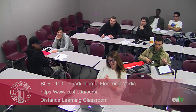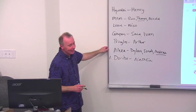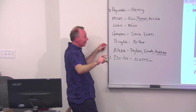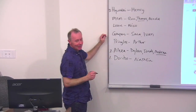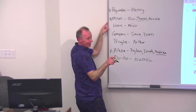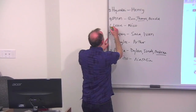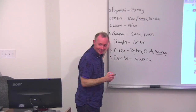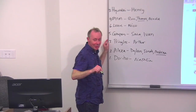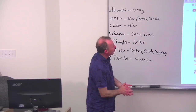Natalia will go first. Henry is second. Dylan and Jonah are third. Ron and company are fourth. Sarah and Ivan are fifth. Nico is sixth. Arthur is seventh. We have a microphone — you have to speak into it pretty closely for people to hear you.